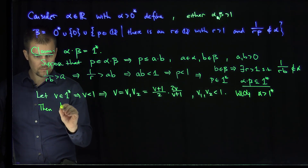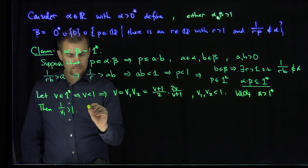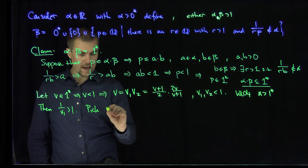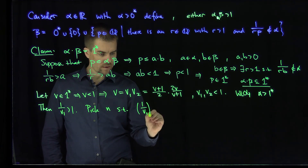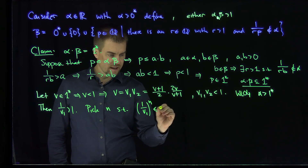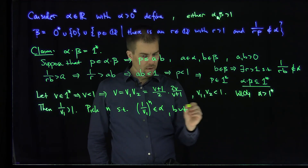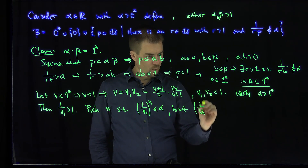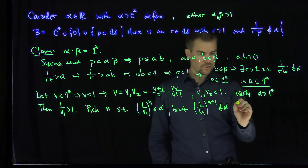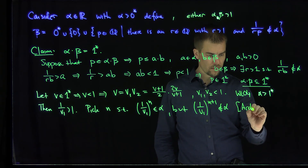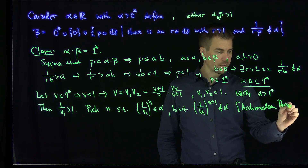We pick n large enough by the Archimedean principle so that 1/v1^n is in alpha, but 1/v1^(n+1) is not in alpha. This is the multiplicative Archimedean principle.